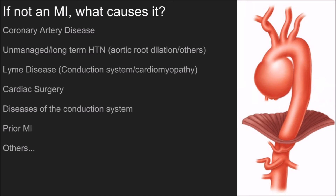Lyme disease can do this — it can affect the actual conduction system, but also it can cause cardiomyopathy, which is a big deal. Unmanaged or atypically presenting Lyme disease means people go years without knowing they have it, and then they manifest a left bundle branch block and cardiomyopathy. When you get to them, they're sick, hypotensive, malaise, lethargy — it may look like a new onset LBBB and they may be in failure, but it doesn't meet Sgarbossa criteria, leaving you confused.